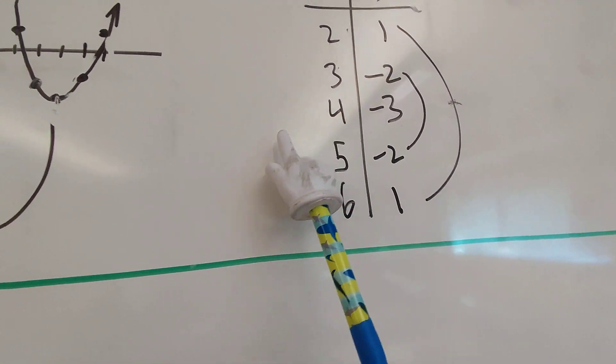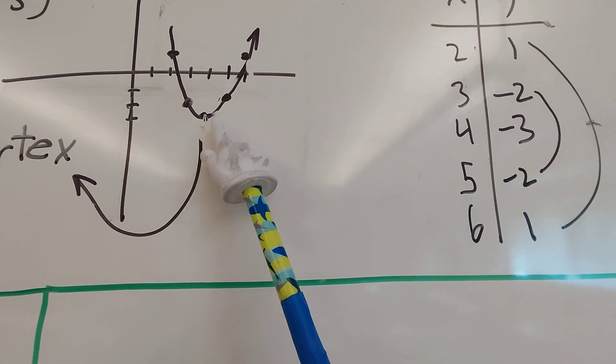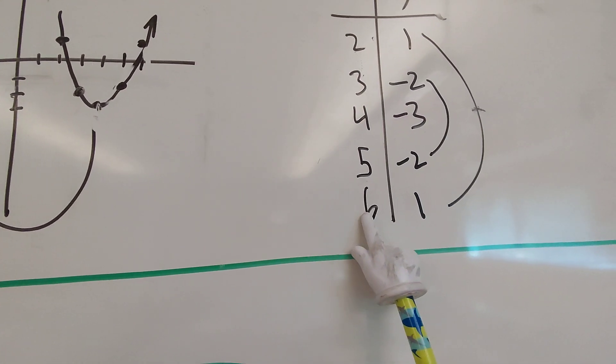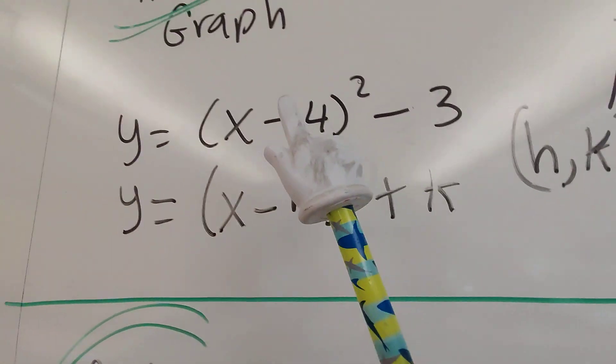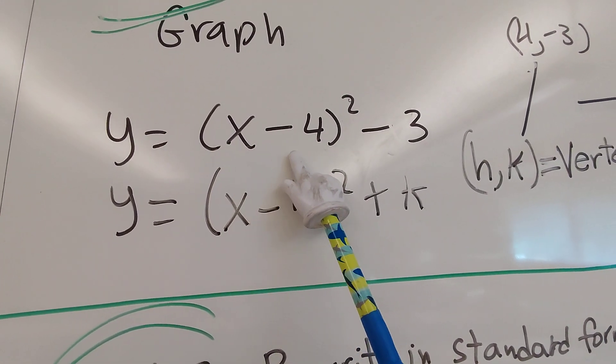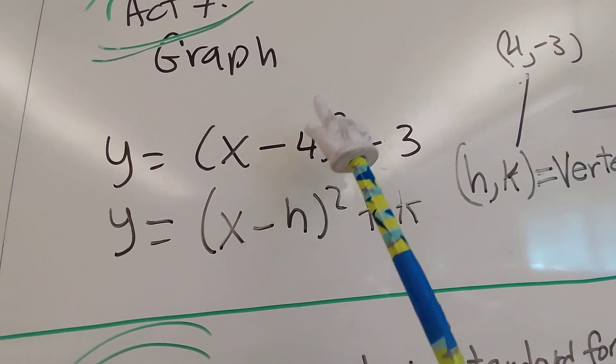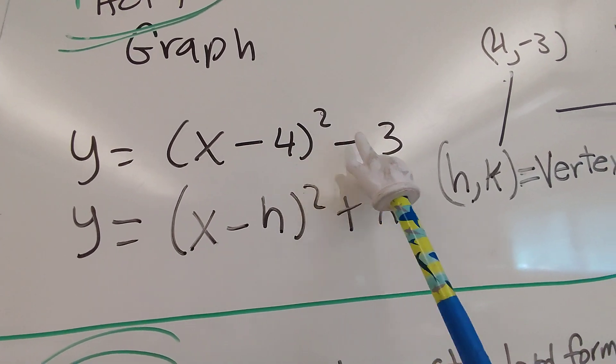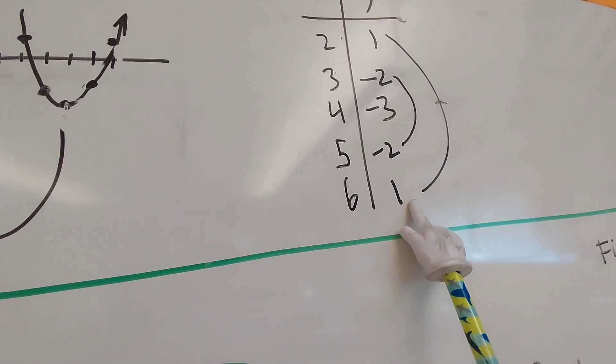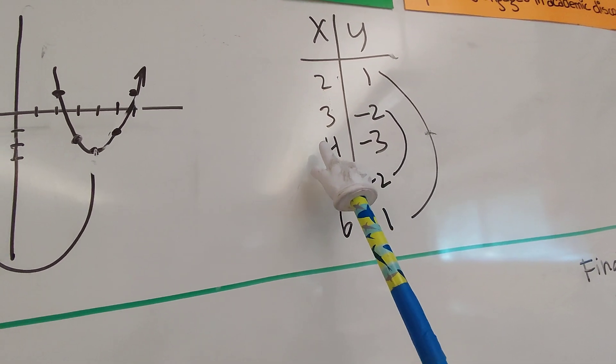Let's go to one more number after my vertex. 4, 5, 6. If x is 6, what is y? It's 1. Let's verify. 6 minus 4 is 2, 2 squared is 4, positive minus 3, that's a 1. Now you do the same thing on the other side.